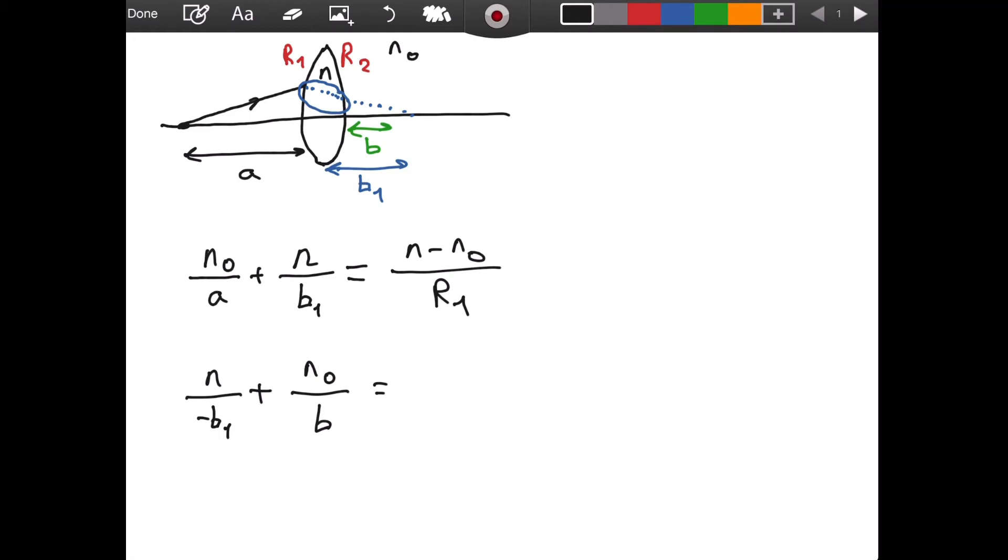Then, on the right, you will again have n minus n₀ divided by r₂. All right? And, now we are ready to combine these two results. How can we combine these? Well, I see that this and this, they look a lot similar. The only difference is their signs are reversed. Well, then, let me add them so that they give me zero.